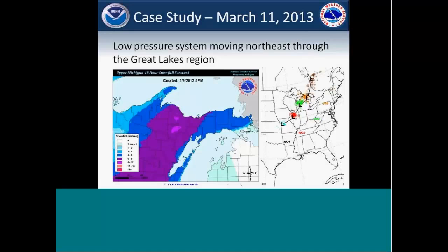Now I'm going to show a couple of case studies of how the grids have worked out, or haven't, over the last couple of months. This first one is from March 11, 2013. We had a low pressure system moving out of the plains and through the Great Lakes region. The image on the left shows our snowfall forecast during that period — a pretty good swath of snow across central Upper Michigan, influencing one of our TAF sites: Sawyer International Airport, KSAW, which is roughly around where the pointer is there — the main airport in the UP for traffic.